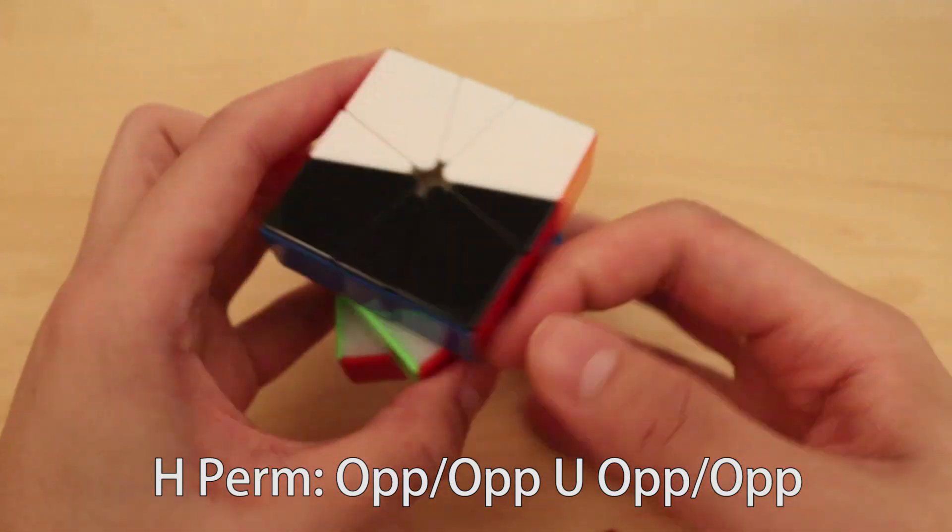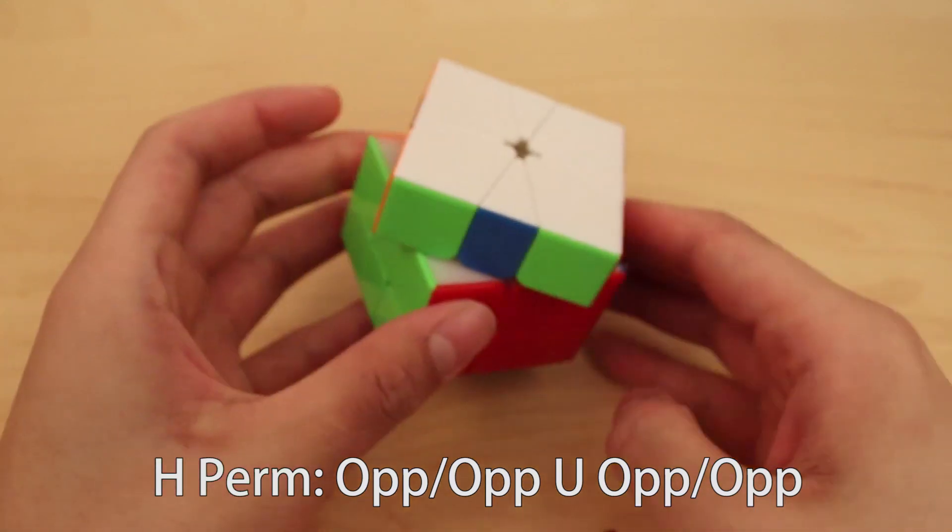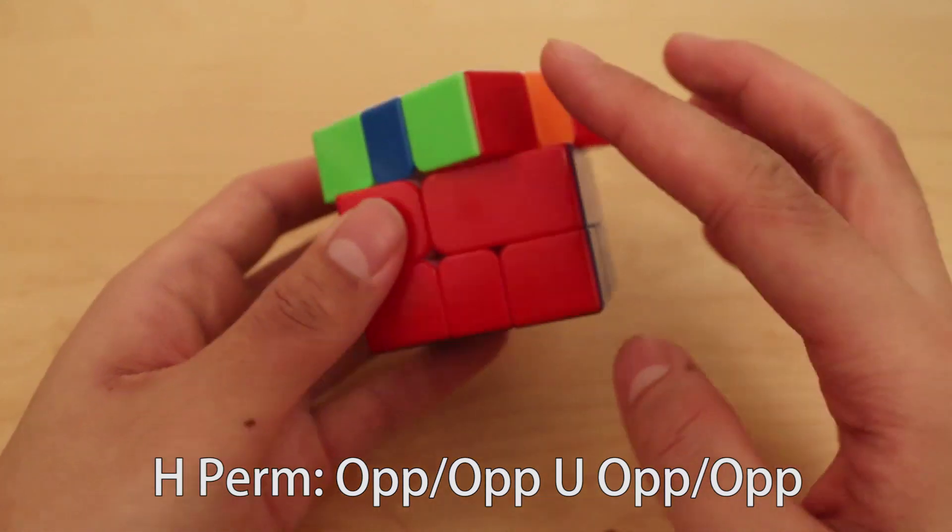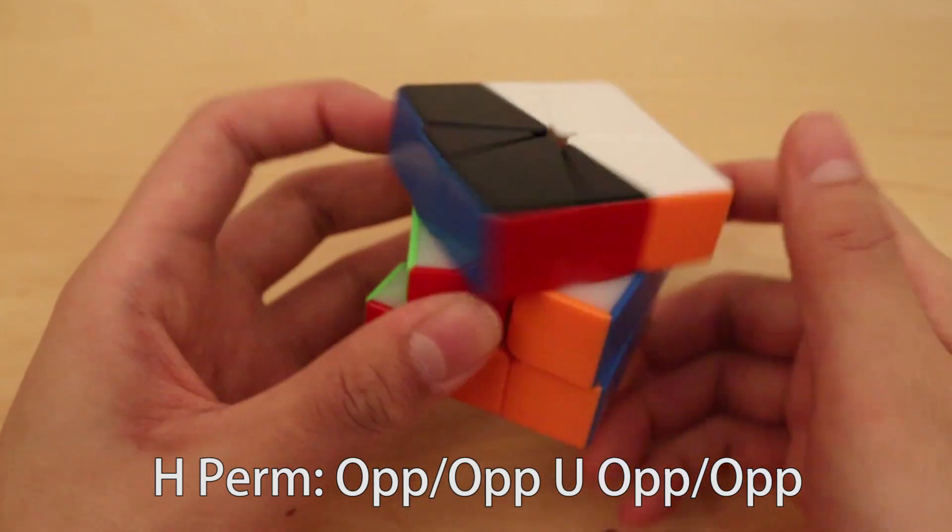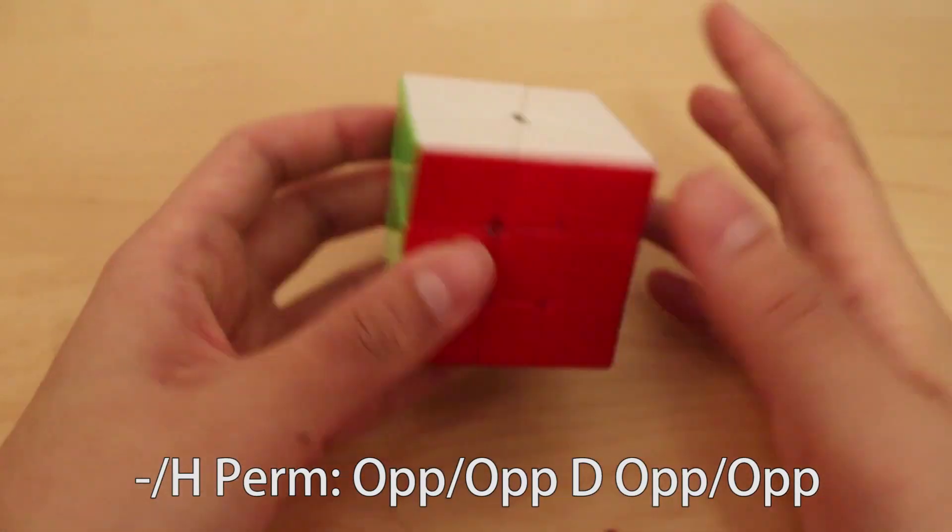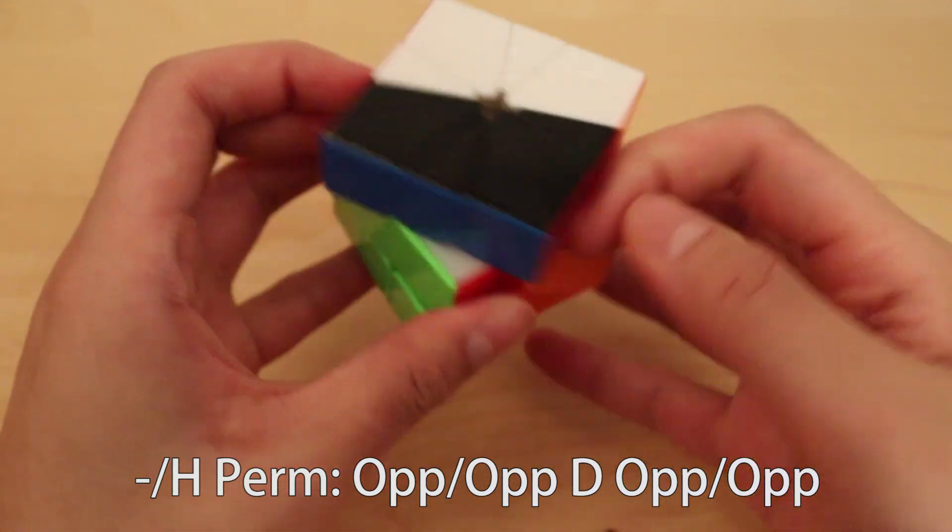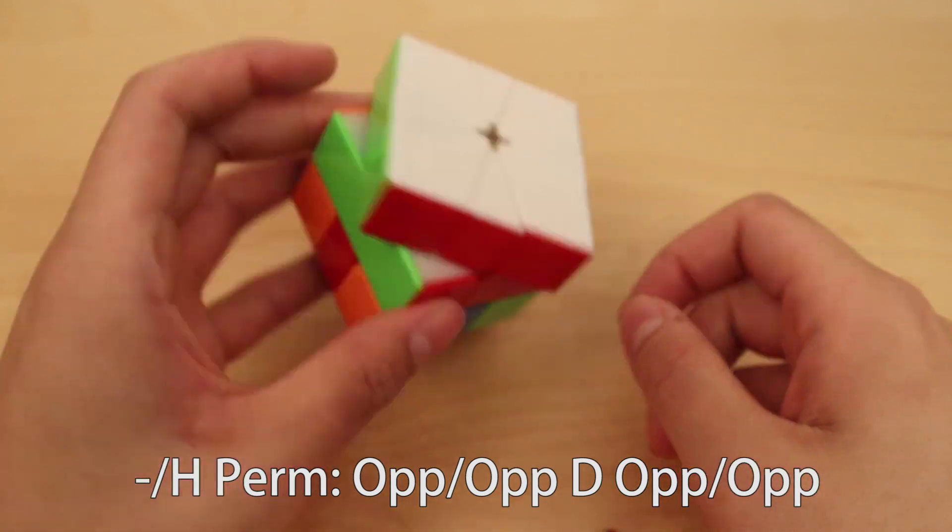So if you do that alg once, and do a U prime and do it again, now you do an H-perm optimally, which is six slices. So whenever you can do something from the top, you can do something from the bottom as well. So if you do op-op, D, op-op, that's H-perm from the bottom.